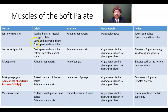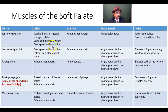Regarding origins: from the auditory tube, we get the tensor veli palatini origin and the levator veli palatini origin — both partly coming from the auditory tube cartilage. The cartilage of the auditory tube is an elastic cartilage.